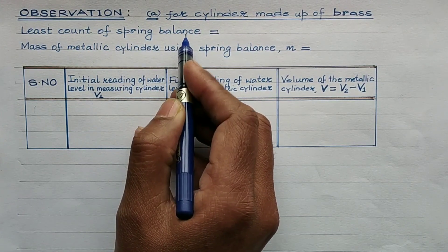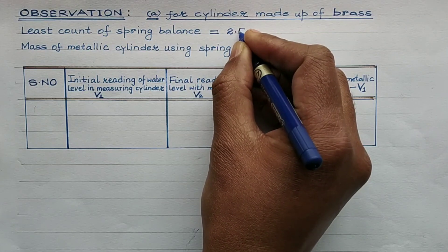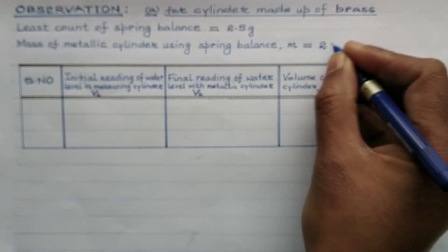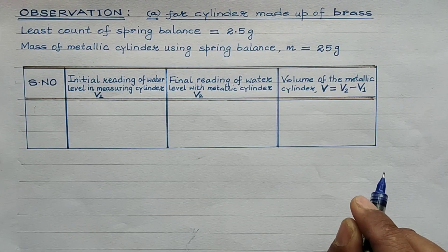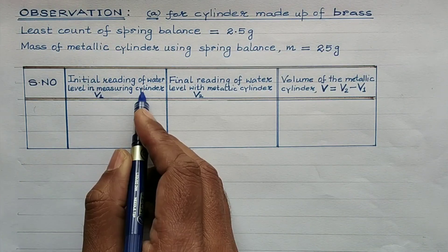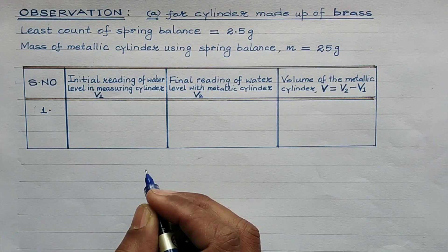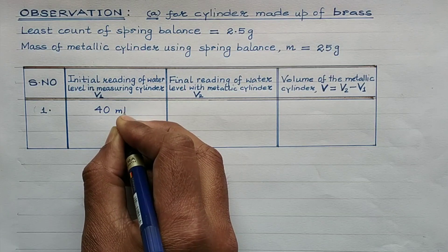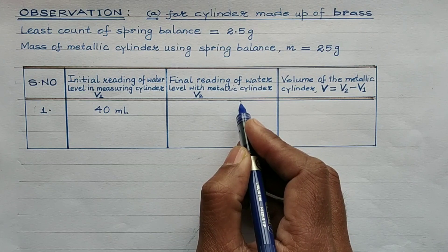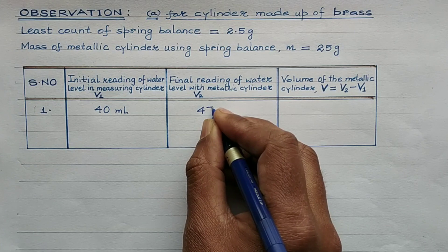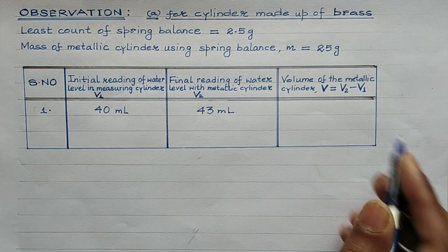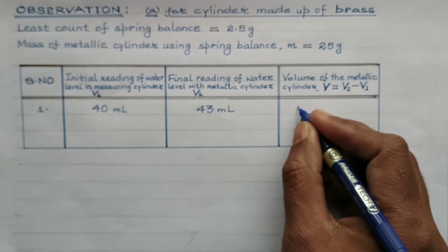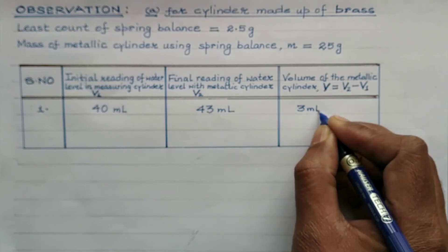This is our observation table for the cylinder made up of brass. The least count of the spring balance is 2.5 grams. The mass of the metallic cylinder using the spring balance is 25 grams. The initial reading of the water level, V1, was 40 ml. On immersing the cylindrical body in water the new reading V2 was found to be 43 ml. The volume of the metallic cylinder is V2 minus V1, so 43 minus 40 equals 3 ml, which equals 3 cm³.